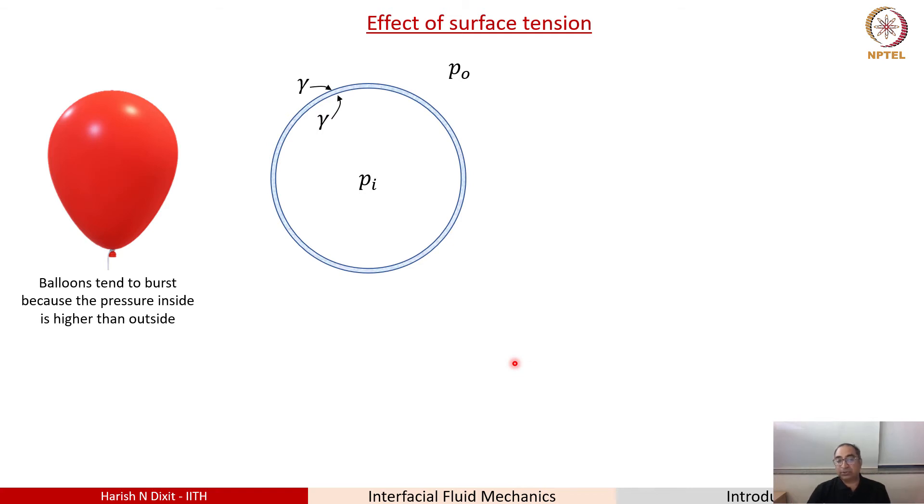This is also true for soap bubbles. Children like to play with soap bubbles. They make soap bubbles and one of the most fascinating things that children find is that these soap bubbles tend to pop. Now the pressure inside is P_I and the pressure outside is P_0 and this P_I is again higher than P_0 because at the interface there are two interfaces in this case. There's gas inside and there's gas outside and there's a thin film which is basically soapy water and you have surface tension.